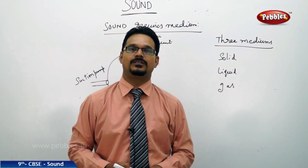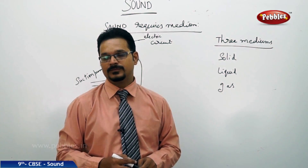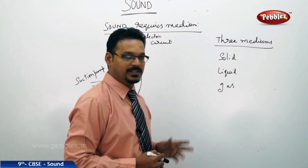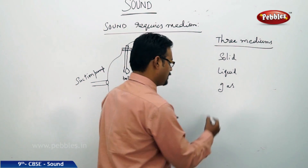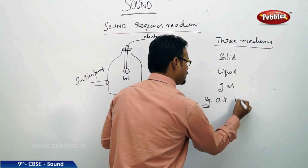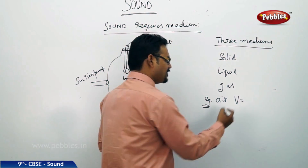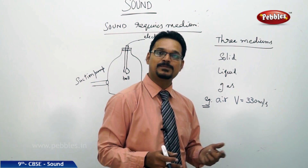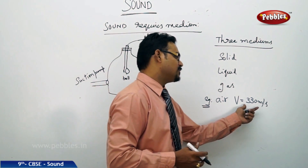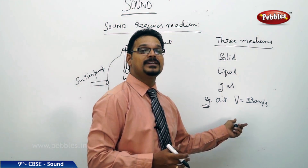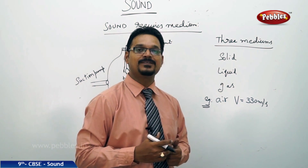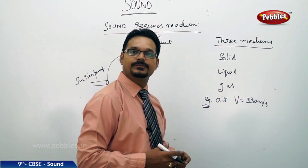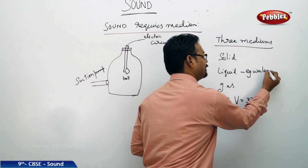Sound travels in all mediums — solids, liquids, and gases — but which one is fastest? In gas, for example air, the speed of sound is represented by V. The speed of sound is 330 meters per second. Some textbooks show 340 meters per second; the difference is based on temperature — when temperature increases, the speed of sound also increases. In general, we take the speed of sound in air as 330 meters per second.